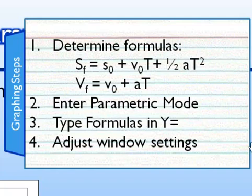Once we've determined what sort of numbers we need in our formulas, we'll turn the calculator on and enter parametric mode. We'll type some formulas in the Y equals screen, which will look a little different, and then we'll adjust the window settings if need be.